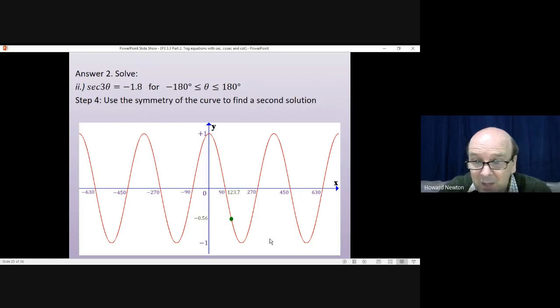There are various ways of doing this. You could say that distance there is 33.7. So do 270. Take away 33.7. And that'll give you the solution here. Or if you wanted to, you could say from 0 to here is 123.7 degrees. So from 360 to here will be 123.7 degrees. So you could do 360. Take away 123.7. There are often many options. All you have to do is see the symmetry of the curve. Appreciate the symmetry of the curve. And use it.